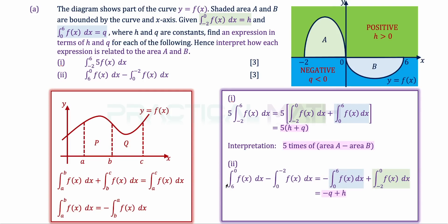Putting a negative in front and swapping the limits: 6 to 0 becomes 0 to 6 (negative q), and 0 to -2 becomes -2 to 0 (double negative gives positive h). So the expression equals -q + h. Since q is negative, -q + h represents the sum of areas A and B. That is the interpretation and answer for part A.